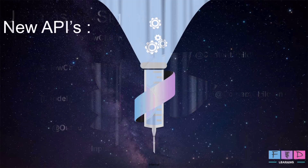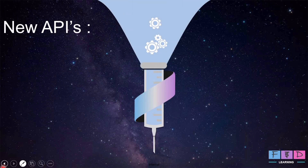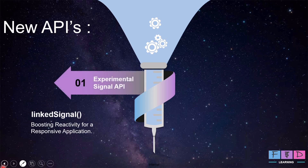Additionally, Angular version 19 introduces several new and experimental APIs. First, let's talk on a Signal API called LinkedSignal. LinkedSignal works similarly to a regular signal, but with one key difference: it's connected to a computed expression that sets its initial value. We can update LinkedSignal freely, just like a regular signal, but when the computed expression changes, LinkedSignal automatically reverts to its calculated value.